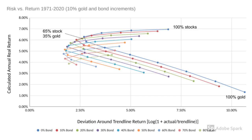I'd like to start this video by saying right off the bat that I'm thrilled to have such a group of critical thinkers for subscribers. You are all the cream of the crop. In my last video, for which I will include a link in the description, I presented this graph showing the CPI-adjusted rate of return of all possible portfolios containing mixes of stocks, bonds, and gold from 1971 through the end of 2019 versus a measure of consistency of those returns.